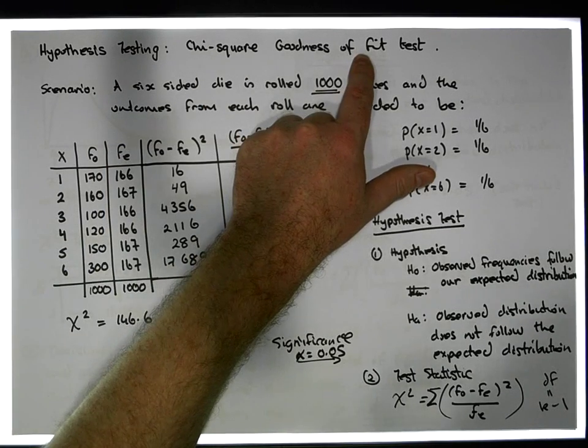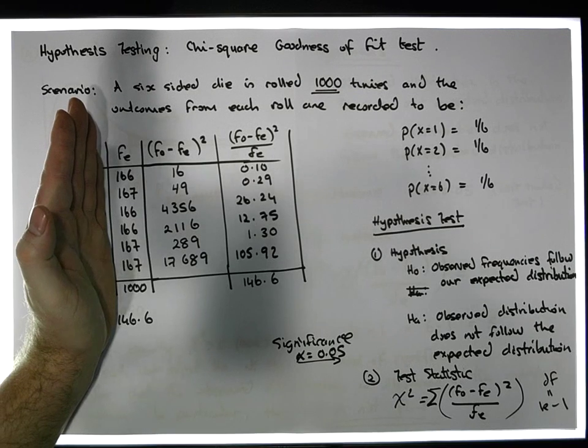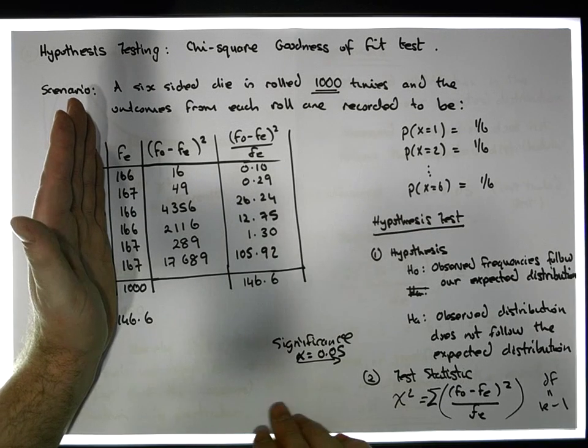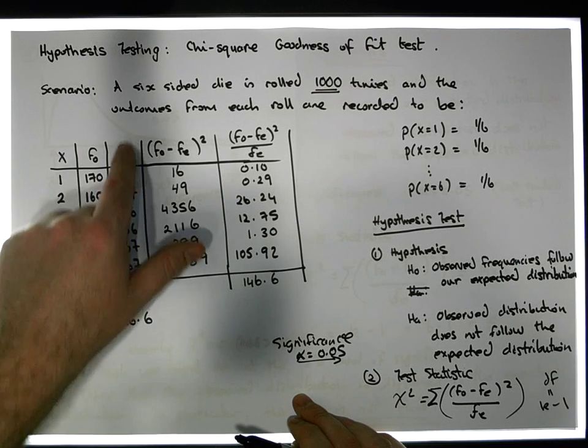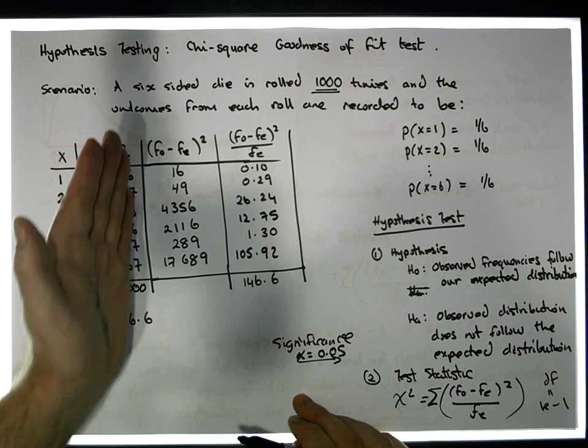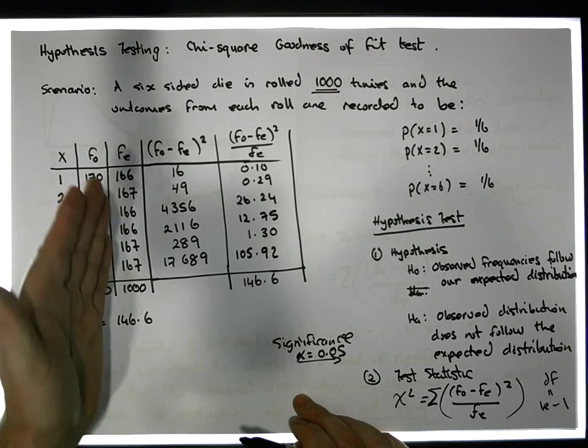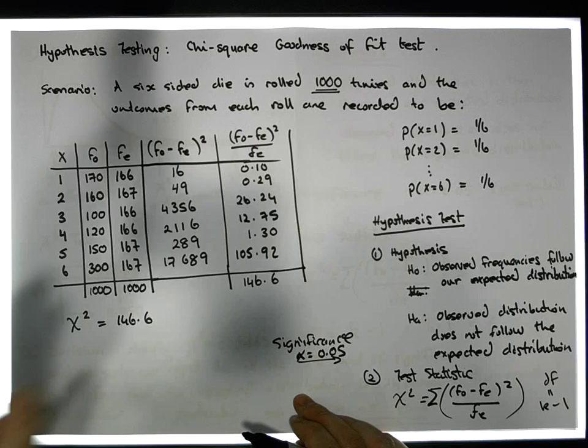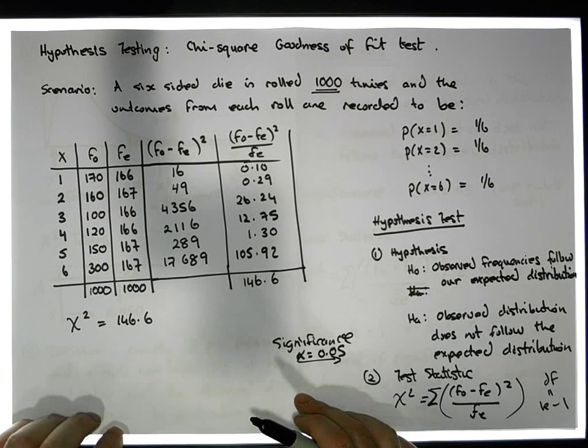For example, we could do a chi-squared goodness of fit test to test whether our observations come from a normal distribution. In which case, we'd have to calculate the expected frequencies under the same conditions, or the probability of observing something with respect to a normal distribution. That would entail constructing z-scores and so on.